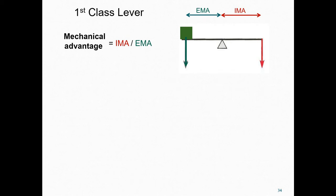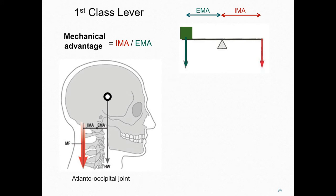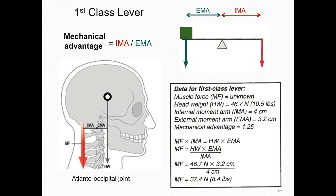The atlanto-occipital joint is an example of a first class lever. The center of mass of the head is forward of the fulcrum point in the atlanto-occipital joint — this explains why our head slumps forward when we fall asleep. Counteracting the external force created by gravity's pull on the head is the action of the head extensors, such as the semispinalis capitis. Notice that the lengths of the internal moment arm (IMA) and the external moment arm (EMA) are quite similar, and the mechanical advantage is calculated to be 1.25.